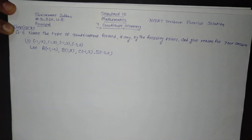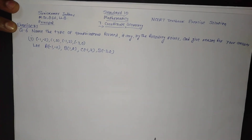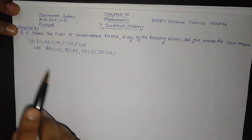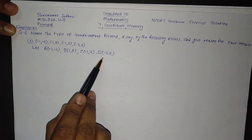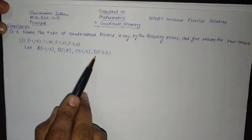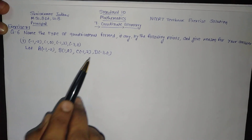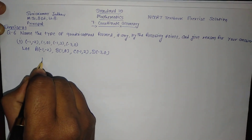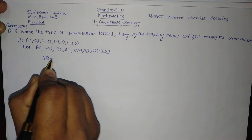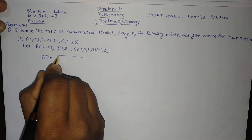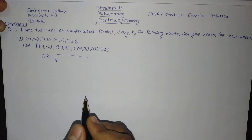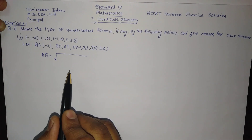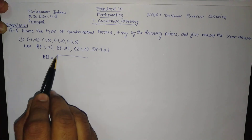Now first of all we will find out all the different distances: AB, BC, CD, and DA. We need to determine what type of quadrilateral it is. So first of all let us begin with AB. We will use the distance formula. You know the distance formula — I will use it directly here. That is √((x₂ - x₁)² + (y₂ - y₁)²).